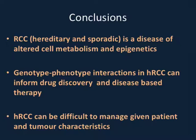In conclusion, RCC can be hereditary or sporadic. The TCGA analysis of both familial and sporadic disease is establishing that RCC is a disease of altered cell metabolism and epigenetics. There are clear genotype-phenotype interactions which can be discerned with genetic counselling to inform not only the subtype of RCC but how that subtype will behave in terms of age of presentation, extra-renal manifestations, and severity of disease. Clinically, hereditary RCC can be difficult to manage given the young patient age, the need for repeat renal surgeries, and the aggressive nature of some types — particularly type 2 papillary RCC.